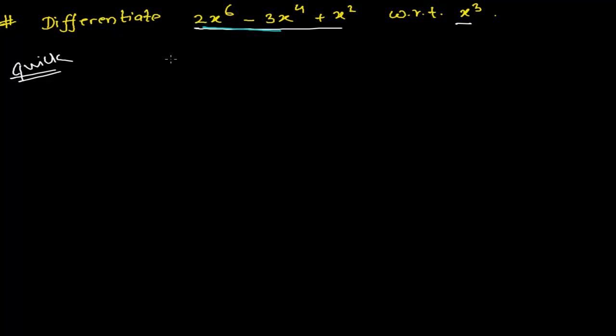If you have the function, let me suppose this is your function f(x) = 2x^6 - 3x^4 + x^2, and imagine g(x) is your another function x^3. Now you have to find out the derivative of this whole thing, or you can say derivative of the function f(x).